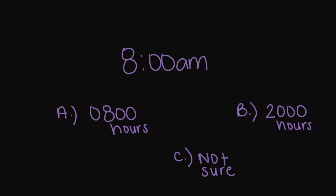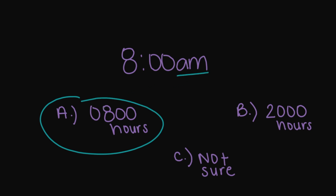So now let's look at 8 a.m. Is it going to be A, 0800 hours; B, 2200 hours; or C, not sure? Your answer is going to be A, 0800 hours, because this is a.m. — all we have to do is add a zero in front of our hour number.